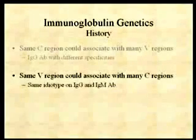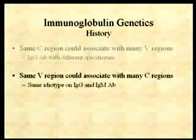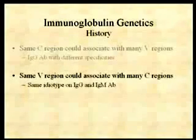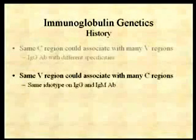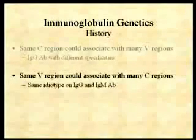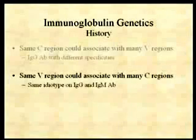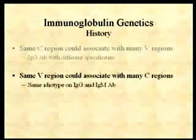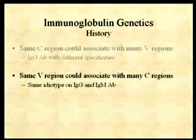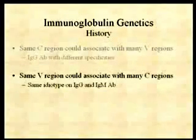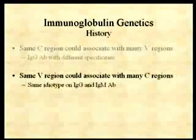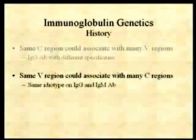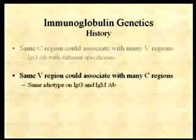It wasn't until the mid-1970s that the first evidence came out that something was happening at the DNA level. In fact, there are two genes, they are not separated — they happen to be on the same chromosome, but they're not the same gene; they're separated on the chromosome — and some rearrangement occurs at the DNA level. We know now that the immunoglobulins are coded for by three gene families: one gene family encodes the kappa chains, another encodes the lambda-like chains, and the third encodes the heavy chain genes. All of these gene families are actually on separate chromosomes.